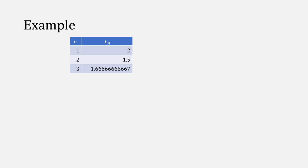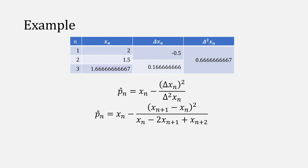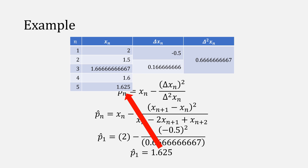Let's look at an example using three of the numbers we computed from fixed point iteration. We can compute delta x and delta squared x and plug them into Aitken's delta squared method. When we do this, we get a result of 1.625. Now, if we had kept iterating using fixed point iteration, we would eventually have reached the value of 1.625. This is the power of Aitken's delta squared method — it's known as an accelerator. We can predict later values using three of the current ones.